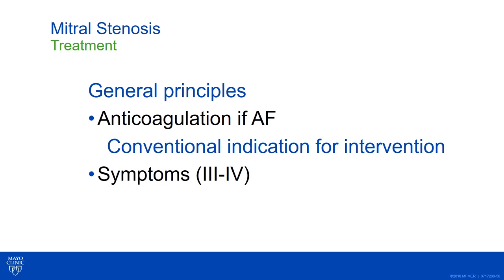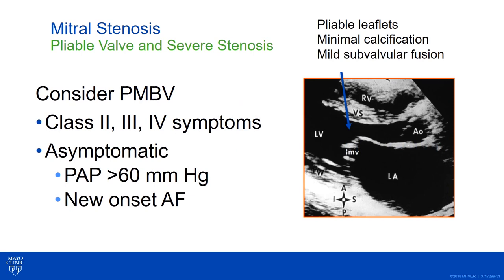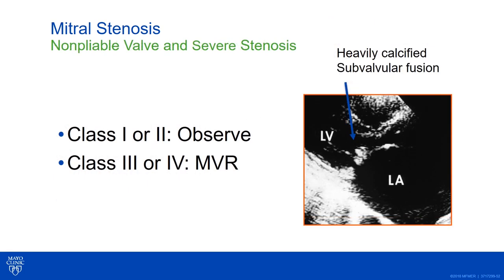We anticoagulate patients with mitral stenosis and AF — warfarin is indicated here because this counts as valvular AF. Treat patients who have advanced symptoms. With mild symptoms, simply slowing the heart rate with a beta blocker can be the most effective therapy. The first line of therapy is to consider whether a valvotomy is indicated, looking for patients with very pliable valves. Early indications for operation might be pulmonary artery pressures greater than 60, even if the patient is asymptomatic, and now also new onset atrial fibrillation. If they have mild symptoms, observe them — and because the ventricle is unaffected, you can follow approximately annually.